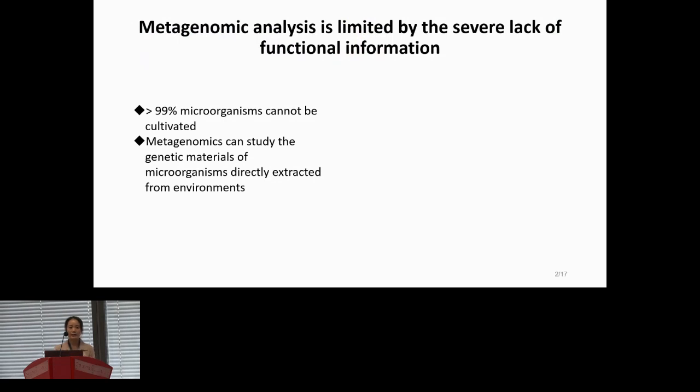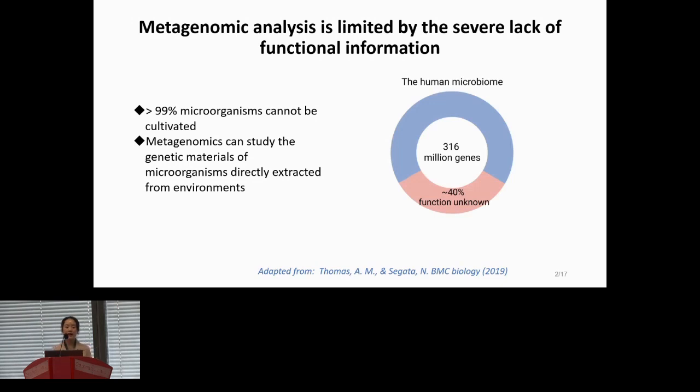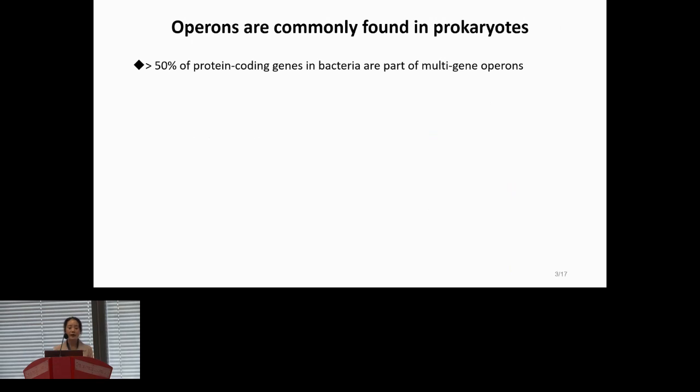As we already know, the vast majority of microbiomes over 90% cannot be cultivated in a laboratory setting. Therefore, metagenomics has emerged as a valuable approach to study them. However, metagenomics analysis is limited to a very small fraction of functional information. The human microbiome, for example, the most intensely studied environment, only about 60% of genes has functional annotations, while in other environments, this fraction can be as low as 10%.